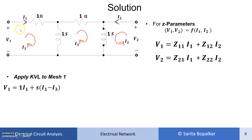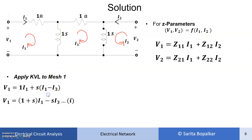Applying KVL to loop 1: V1 = 1·I1 + S·(I1 − I3), because the current through this inductor (value S) is I1 minus I3, which flow in opposite directions. Combining the I1 terms gives V1 = (1 + S)·I1 − S·I3.